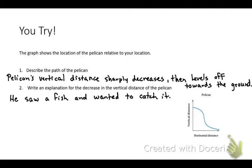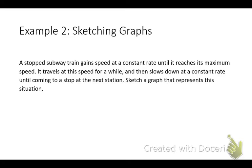You're going to draw your own in the next example. So you're going to sketch one. A subway train gains speed at a constant rate until it reaches its maximum speed. It travels at this speed for a while and then slows down at a constant rate until coming to a stop at the next station. So you're going to sketch a graph. I want you to draw a vertical line and then I want you to draw a horizontal line.